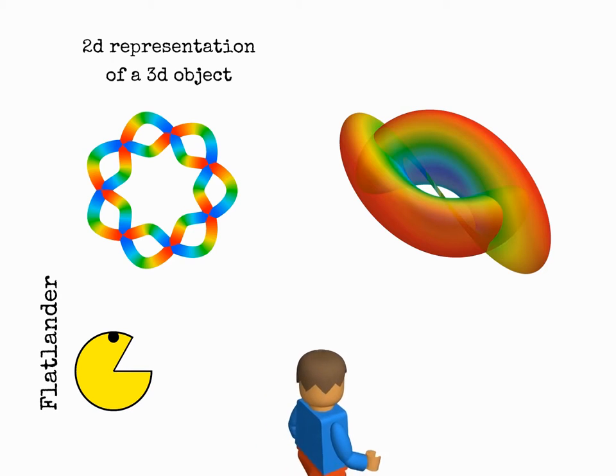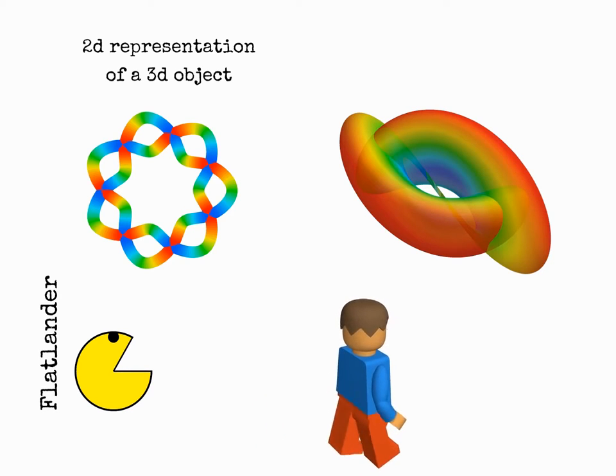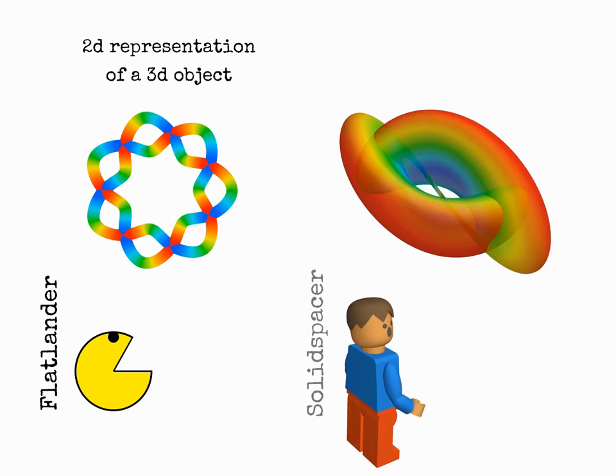Likewise, we, solid spacers, can have some intuition of four dimensional objects by looking at their 3D representations.